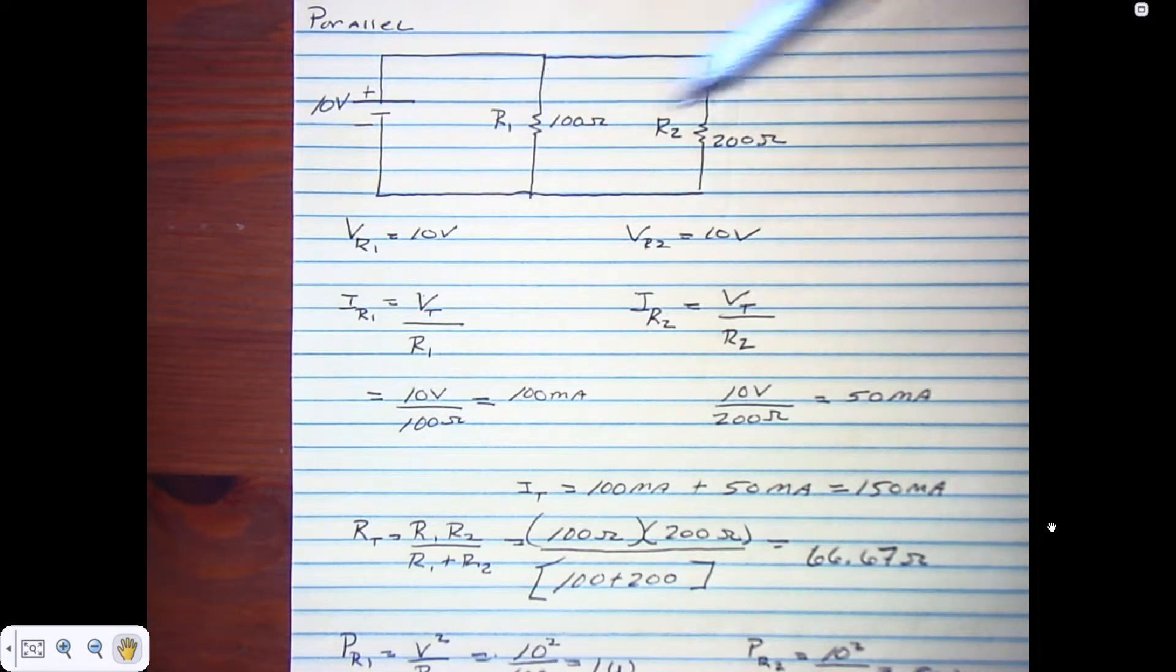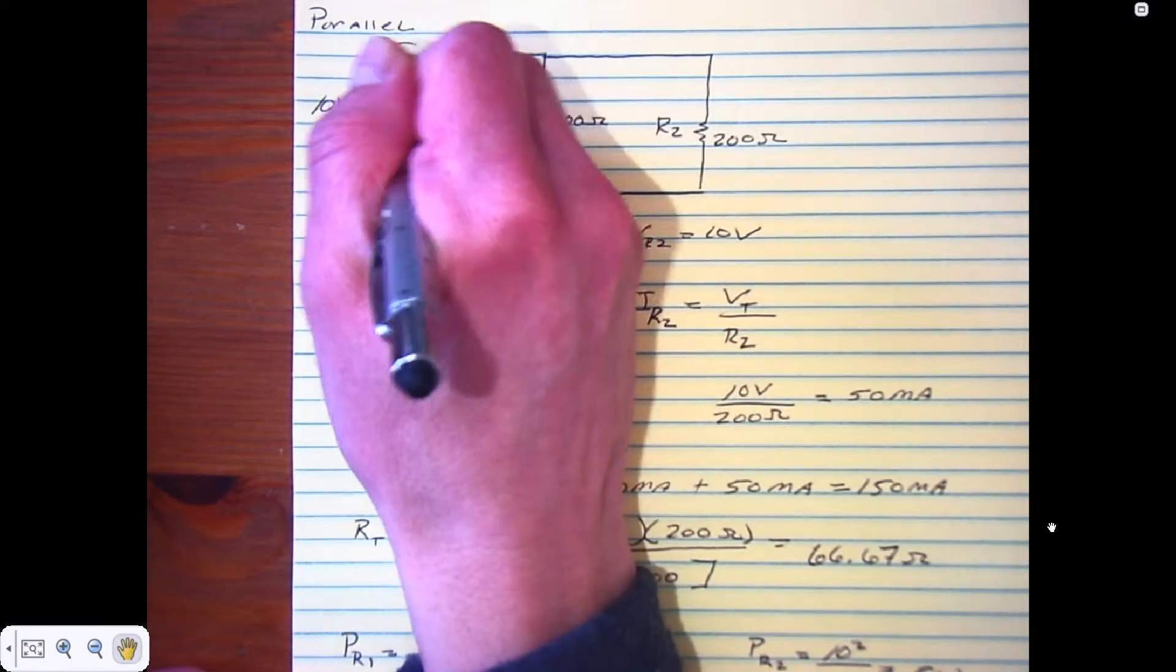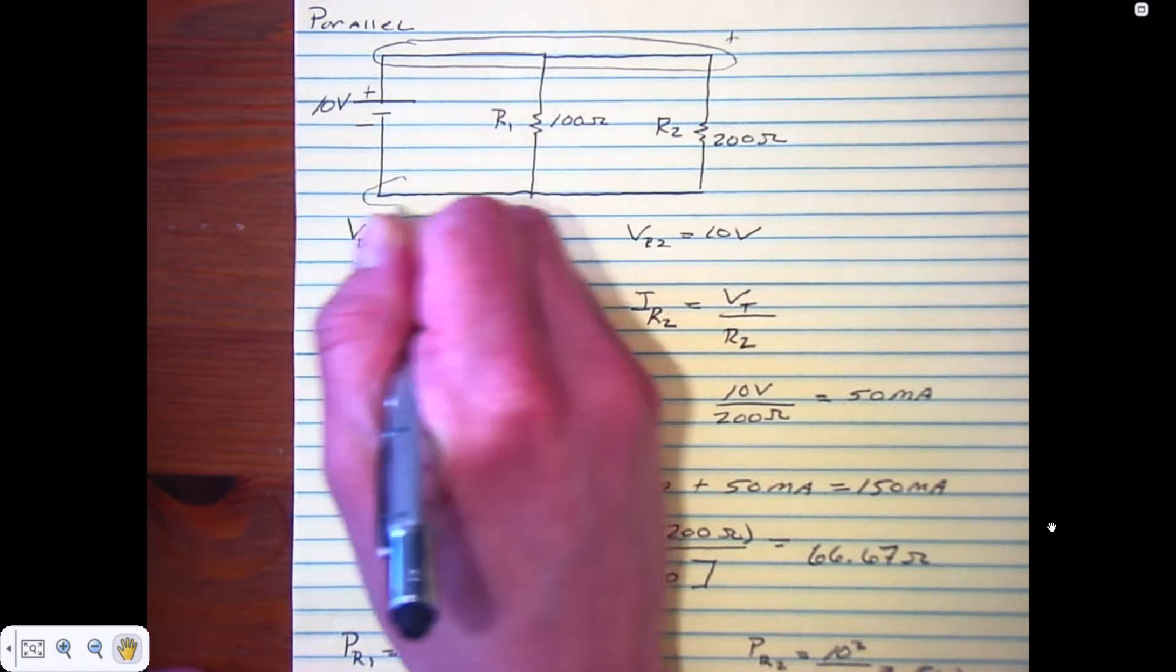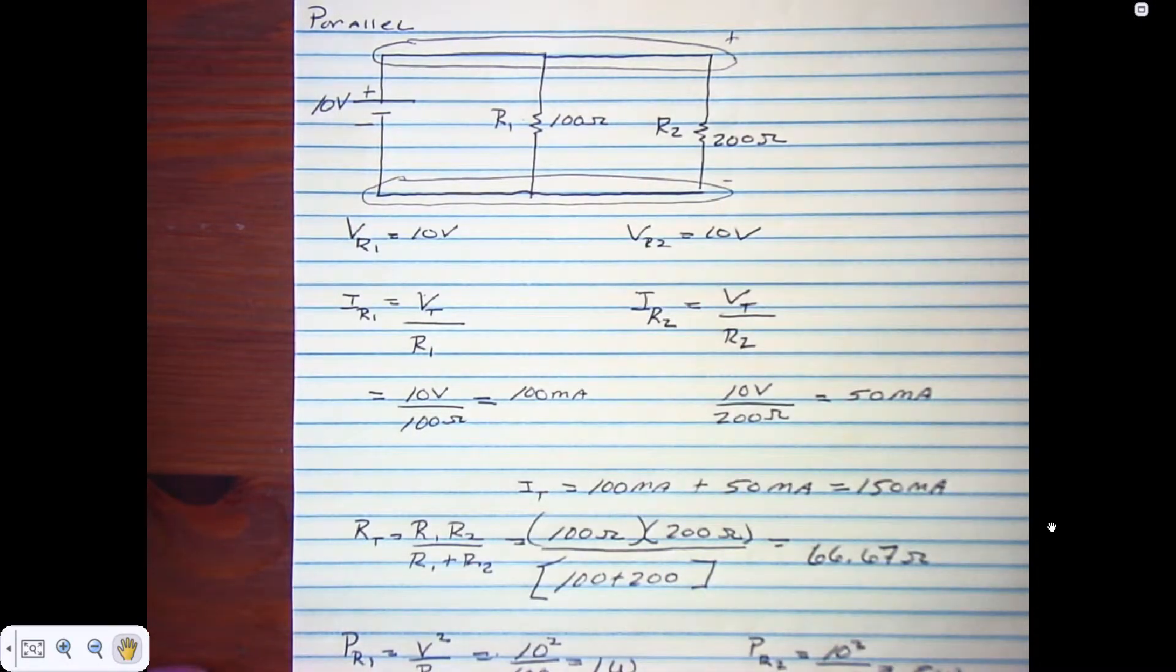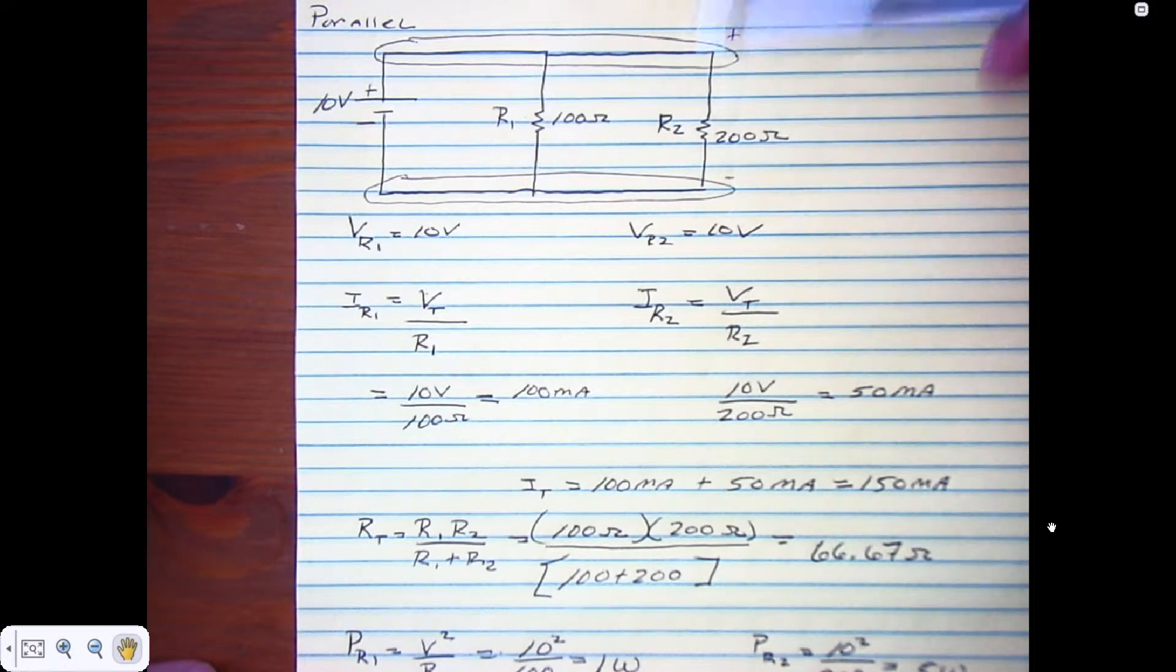Basically what we have is a parallel circuit with R1 at 100 ohms and R2 at 200 ohms. We know they're parallel because this top part is the positive rail and this is our bottom negative rail. We have two resistors R1 and R2.